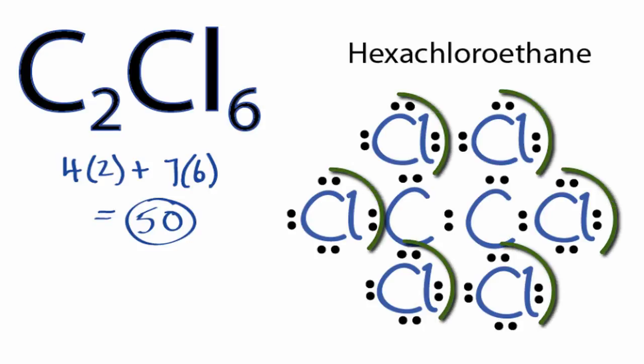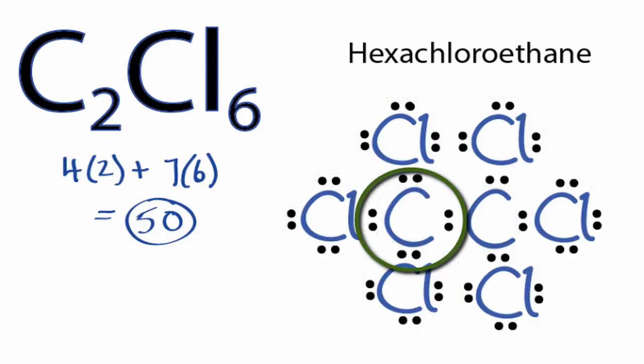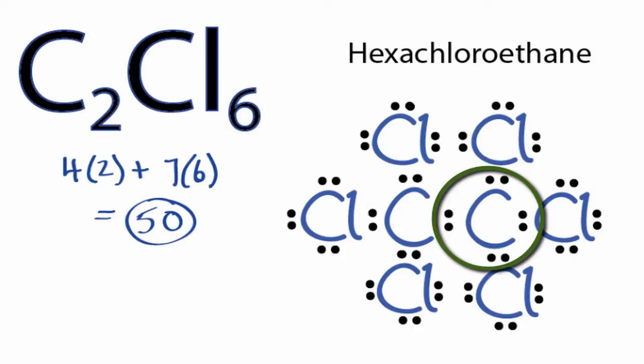You can see that the chlorines, each chlorine has eight valence electrons. So the octets are full for chlorines. And then those carbons in the center, the carbon on the left, it has eight valence electrons. The carbon on the right, it has eight valence electrons.